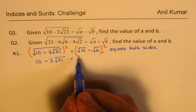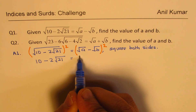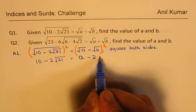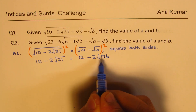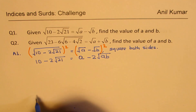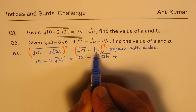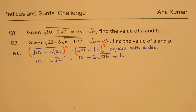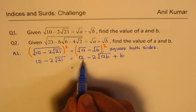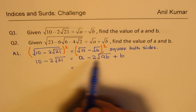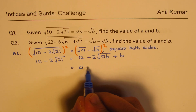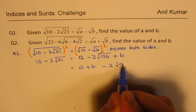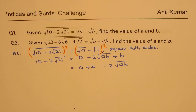The three terms are: A, minus 2 times square root of AB, plus B. We can combine A and B, so we get A plus B minus 2 times square root of AB.